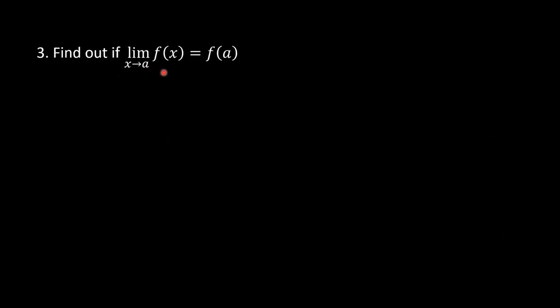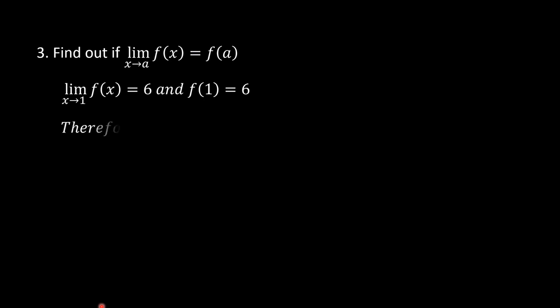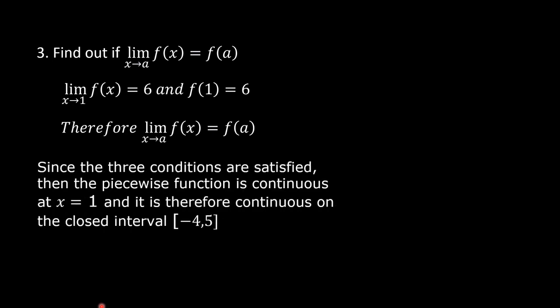Condition c: find out if the limit of f of x as x approaches 1 equals f of 1. The limit equals 6 and f of 1 also equals 6. Since all three conditions are satisfied, the piecewise function is continuous at x equals 1, and therefore continuous on the closed interval negative 4 to 5.